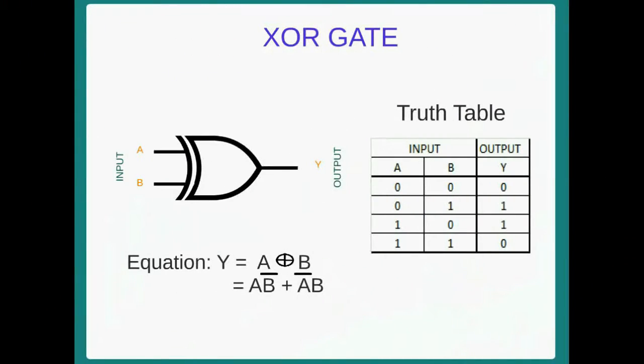Now we will discuss about XOR gate. Two inputs are there. One input is A and another is B. The output is Y. Truth table: for different inputs, output is logic high, that is 1. And for same inputs, output is logic low, that is 0. Equation: Y equal to A XOR B.